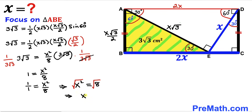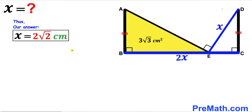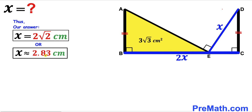Taking the square root of both sides, X = 2√2 centimeters. So after all the calculations, our answer is X = 2√2 cm, which is approximately equal to 2.83 centimeters. Thanks for watching and please don't forget to subscribe to my channel for more exciting videos.